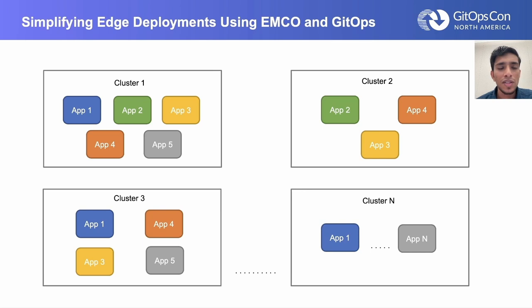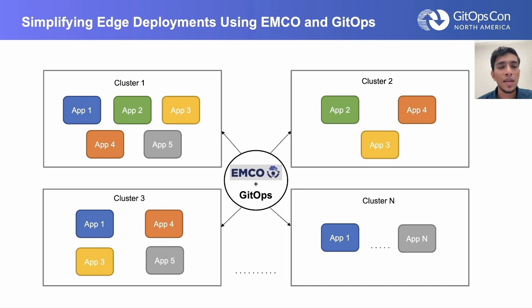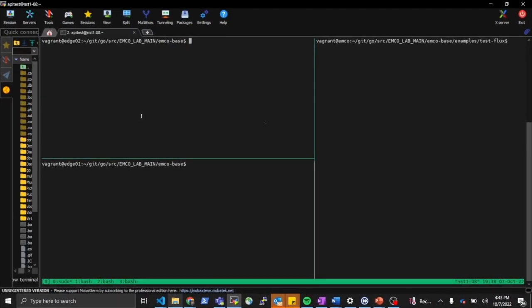Recapping our initial problem statement: we have n clusters with n different types of apps. With all the discussion so far, we recognize that EMCO plus GitOps is a perfect solution. By having them at the center of this deployment, we can easily simplify deployments of applications on any complex cluster setup. We are now doing a small demo to showcase how EMCO with GitOps can be used to apply applications to clusters.